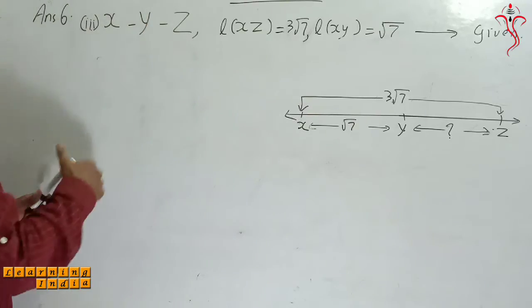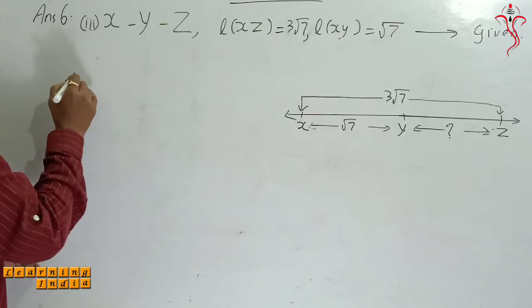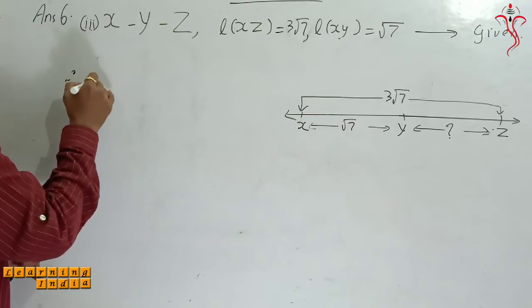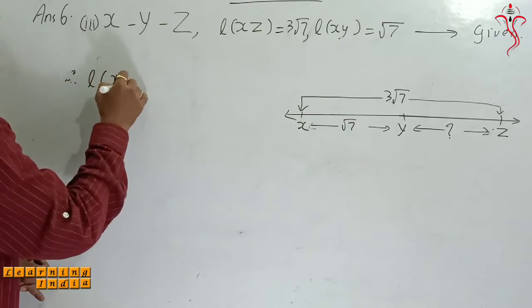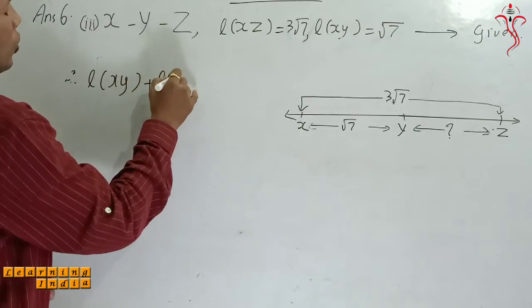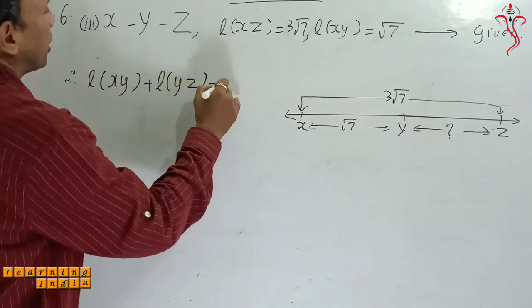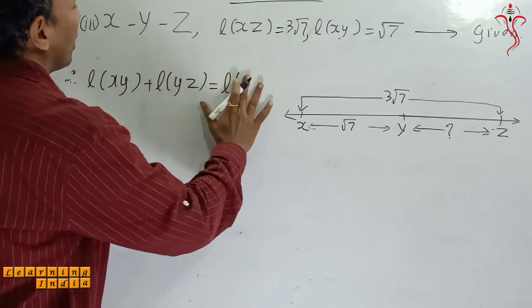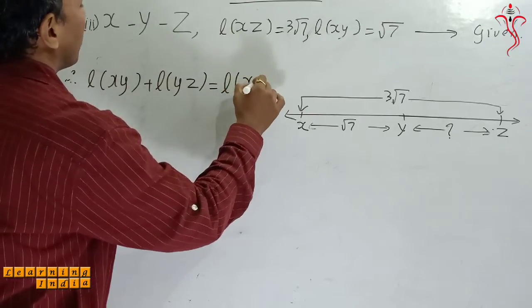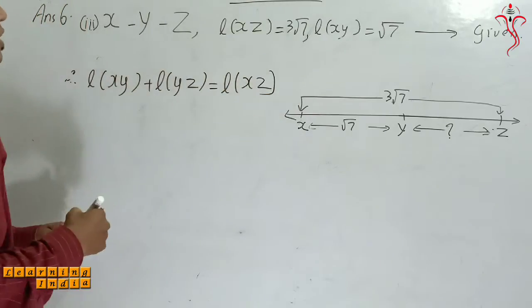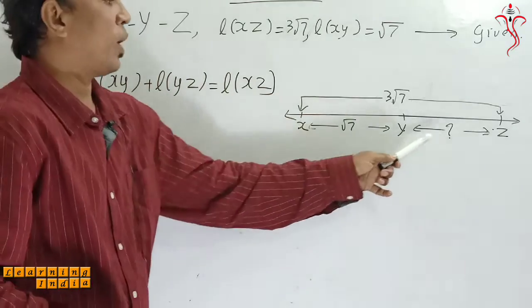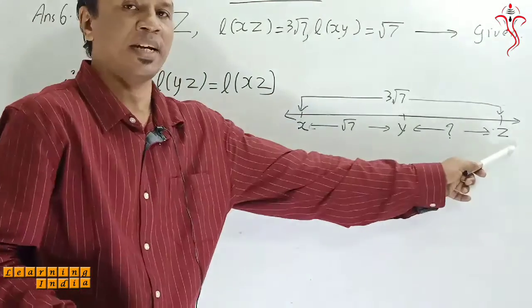These three points are collinear. Therefore what I have to write here: length XY plus length YZ is equal to length XZ. XY plus YZ is equal to XZ.